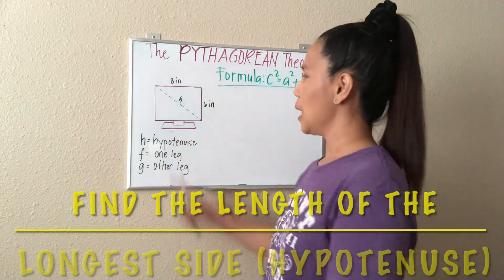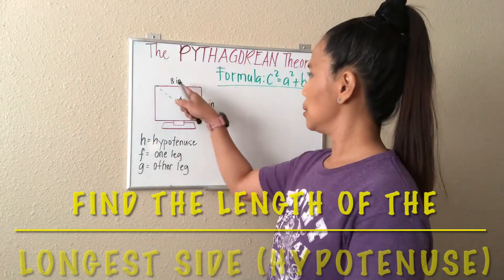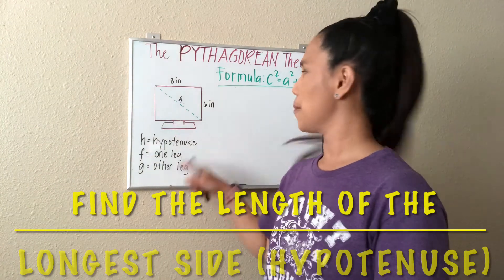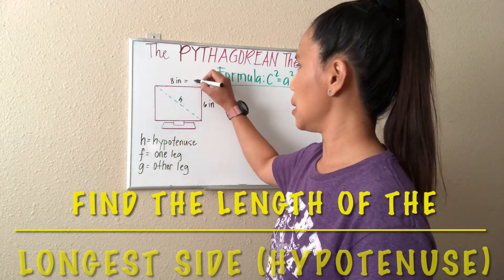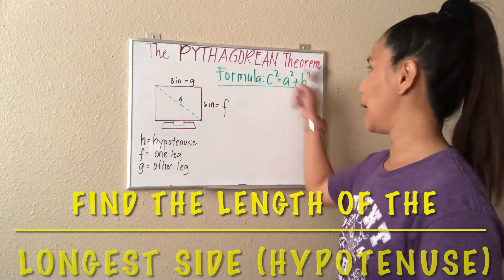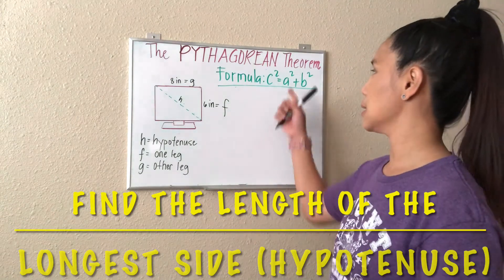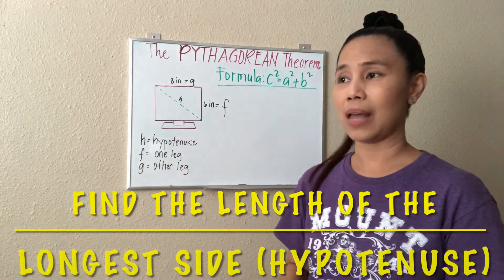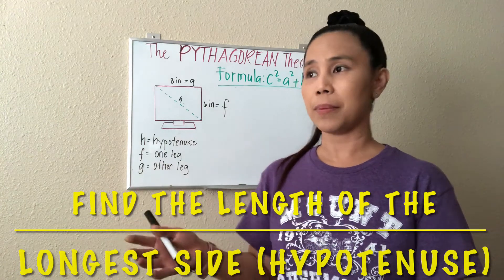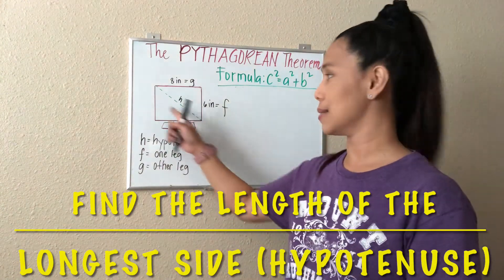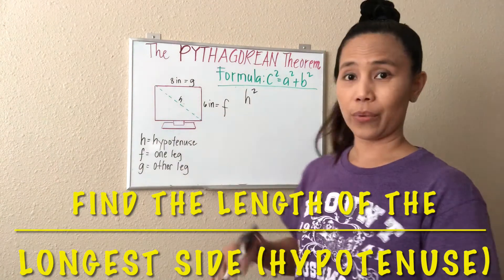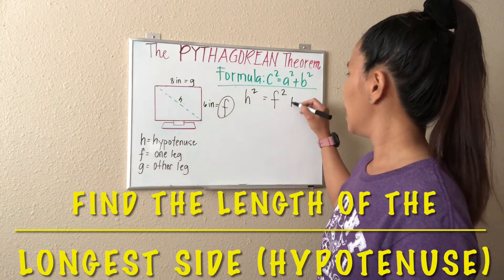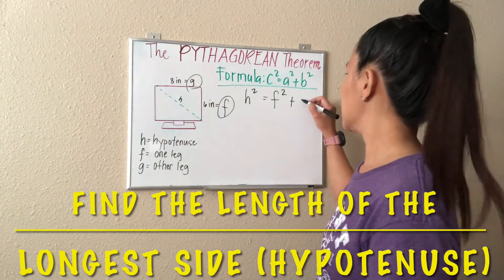Let's have another example. Imagine this is a computer monitor or a television and the values of the other two sides are given. However, we have to find the hypotenuse. We can represent the hypotenuse as H, and the other legs as G and F. Now we can apply the Pythagorean theorem formula, which is C squared is equal to A squared plus B squared. We can always use another letter or variable — we can represent C as H since C is the hypotenuse. So we can say H squared instead of C squared. A squared could be F squared, and B would be represented by G, so that would be G squared.